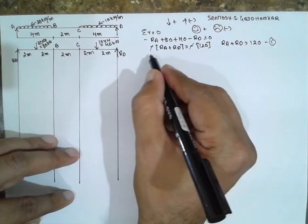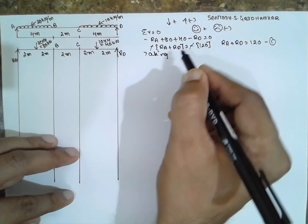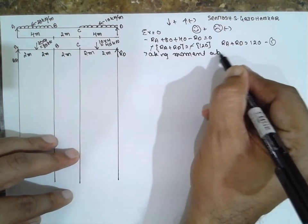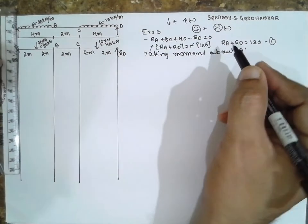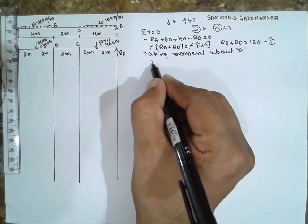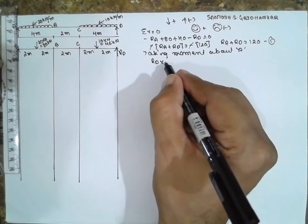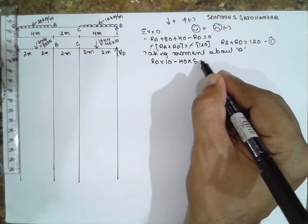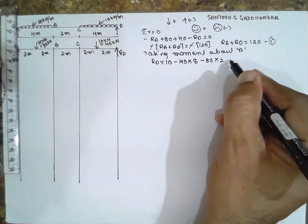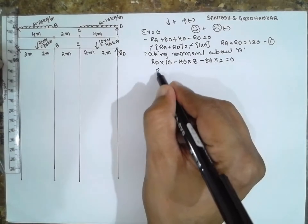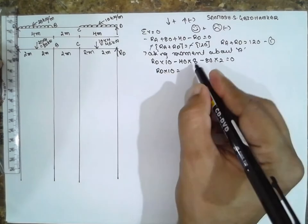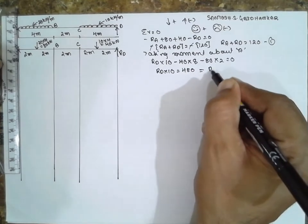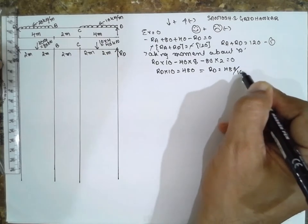Now taking the moment about A. This becomes for anti-clockwise, RD into total distance, which is 10, minus 40 into 8, minus 80 into 2 equals 0. Therefore RD into 10 equals 480, therefore RD equals 480 divided by 10, it will be 48 kN.